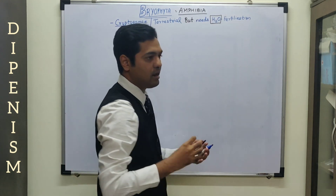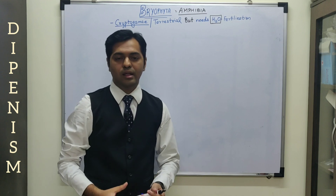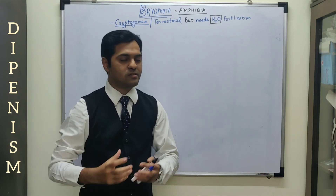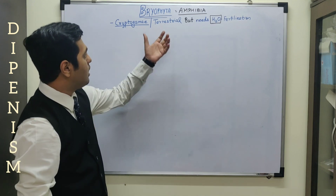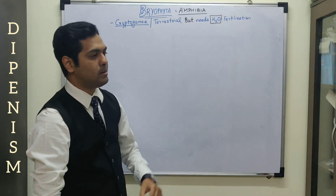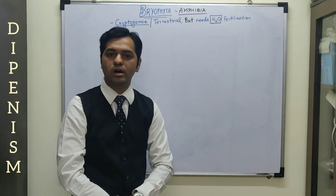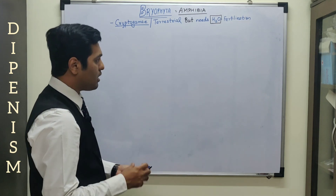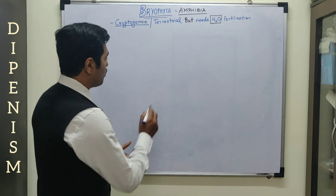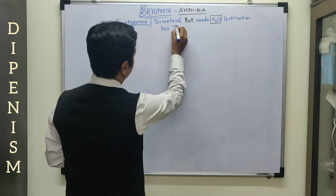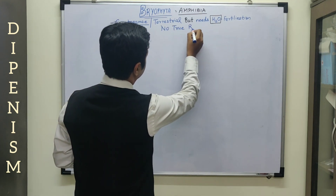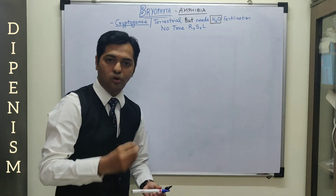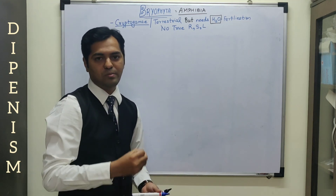In fact, we call them as the amphibia of the plant kingdom. Just like there are amphibian animals wherein they survive on land as well as in water in particular stages, just like that, these are considered as amphibia because of the dependency on water, and they have evolved on land as well. Also, in these plants, there is no presence of true root, stem, or leaf, and there is presence of false root, false stem, and false leaf.